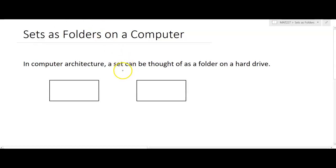So let's think about that relationship. A set and a folder on a hard drive can actually be thought of as analogous to one another. So on your computer, if you're running a PC, you might have your C drive. And in that C drive, you have some sort of folder like documents.